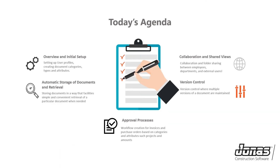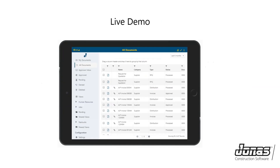With these benefits in mind, let's go over our agenda for today. We're going to talk about the initial overview and setup in Jonas Documents — how you'll set up your user profiles and create different document categories and attributes. We'll also cover how you can store and retrieve documents, creating different workflows such as an approval process for AP invoices or purchase orders, collaboration and shared views, and version control — how multiple versions of documents can be maintained and how you can access their history. So let's jump into the live demo.